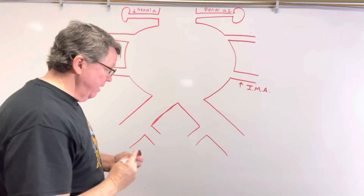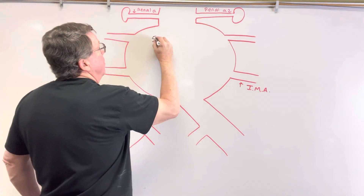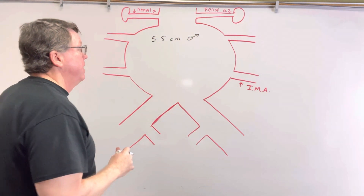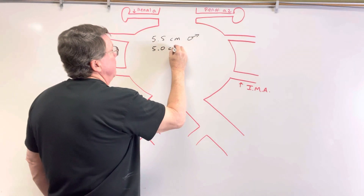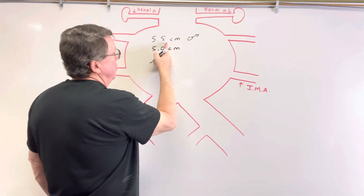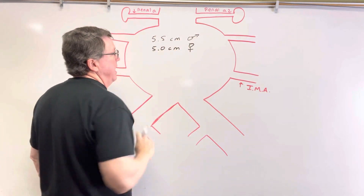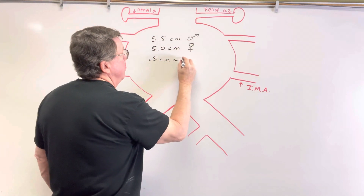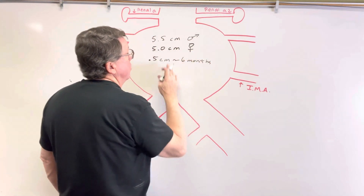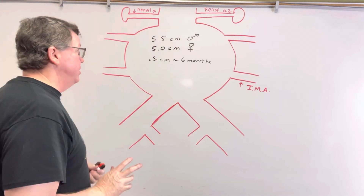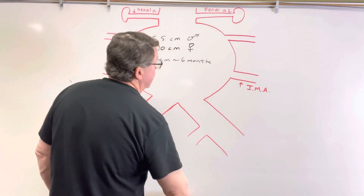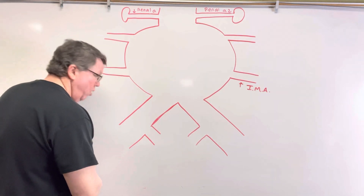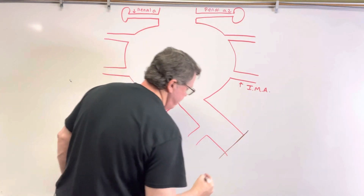When do they decide to fix it? If the aneurysm gets to be more than 5.5 centimeters in a man, they may go in and do a repair. In women, if it gets to about 5 centimeters — about 2.2 inches — they may fix it. Or if it starts to grow at a fast rate — about 5 millimeters in 6 months — they may also decide to do a repair. These are all elective surgeries.